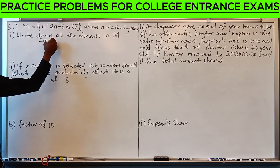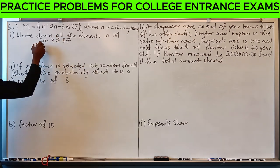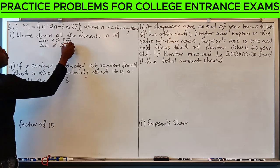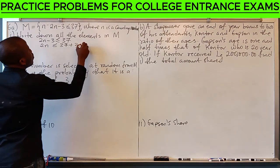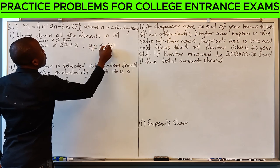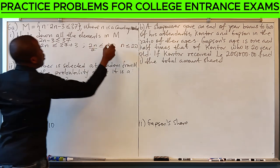So, 2N minus 3 less than or equal to 37. Add 3 to both sides. 2N less than or equal to 40. Let's divide both sides by 2. We have that N is less than or equal to 20.